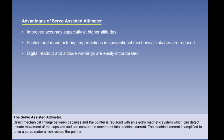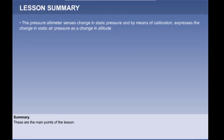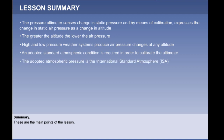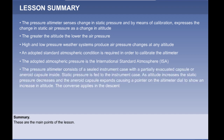This concludes the lesson. A summary of the main points follows. The pressure altimeter senses change in static pressure and by means of calibration expresses the change in static air pressure as a change in altitude. The greater the altitude the lower the air pressure. High and low pressure weather systems produce air pressure changes at any altitude. An adopted standard atmospheric condition is required in order to calibrate the altimeter. The standard atmospheric condition is the International Standard Atmosphere ISA. The pressure altimeter consists of a sealed instrument case with a partially evacuated aneroid capsule inside.